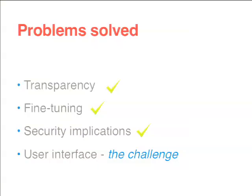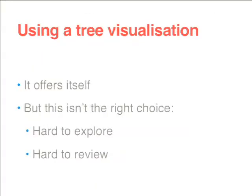We kill the problematic permissions, so we don't have security implications anymore. And the real challenge is the user interface. Because we have a hierarchical structure, using a tree visualization offers itself. There are a bunch of JavaScript tree visualizations out there, so why not use one of them? Because it's not a good idea — trees with collapsing options are hard to explore and hard to review.